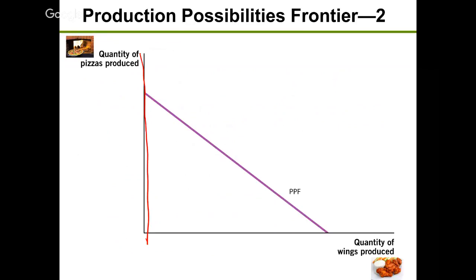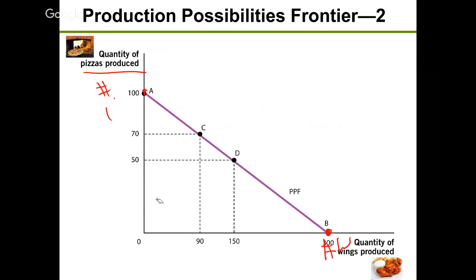On the vertical axis is the quantity of pizza that can be produced; on the horizontal axis is the quantity of wings. The maximum number of wings is shown on one end, and the maximum number of pizzas on the other. Points in between capture different combinations. Suppose we can produce a maximum of 100 pizza or 300 wings. Point D is in the middle — 50 pizza and 150 wings.